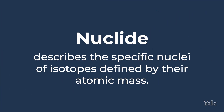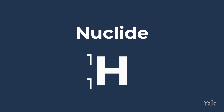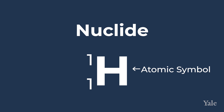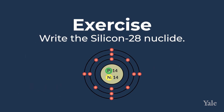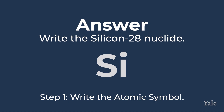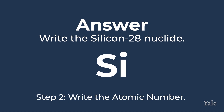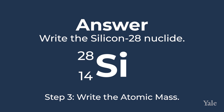Nuclides, a name given to describe the number of protons and neutrons in a specific isotope of an atom, are identified with a specific naming system. In this nomenclature, we write the atomic symbol of the element, the value of the atomic number Z to the lower left of the atomic symbol, and the mass number A to the top left of the atomic symbol. For silicon-28, we would write silicon's atomic symbol Si, with its atomic number 14 as the subscript, and 28 as the superscript because it has 14 neutrons and 14 protons, so its mass number is 28.